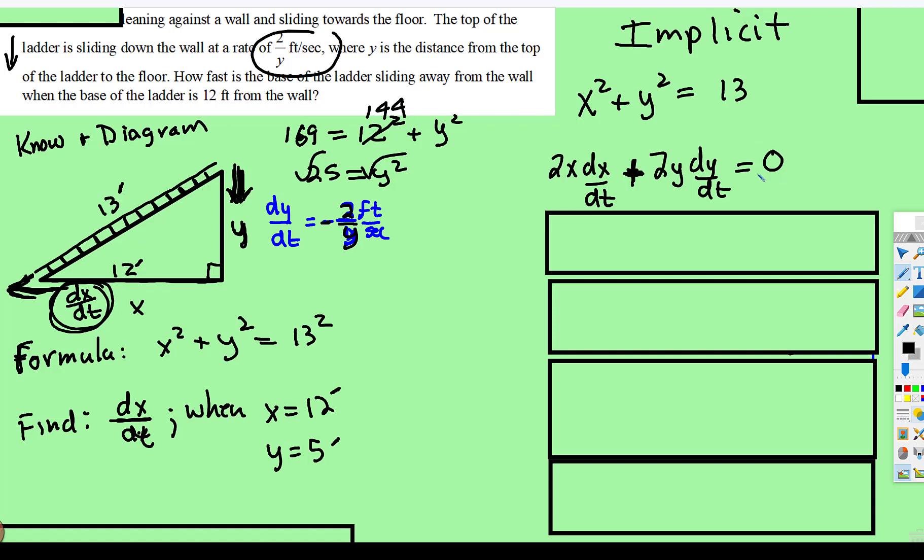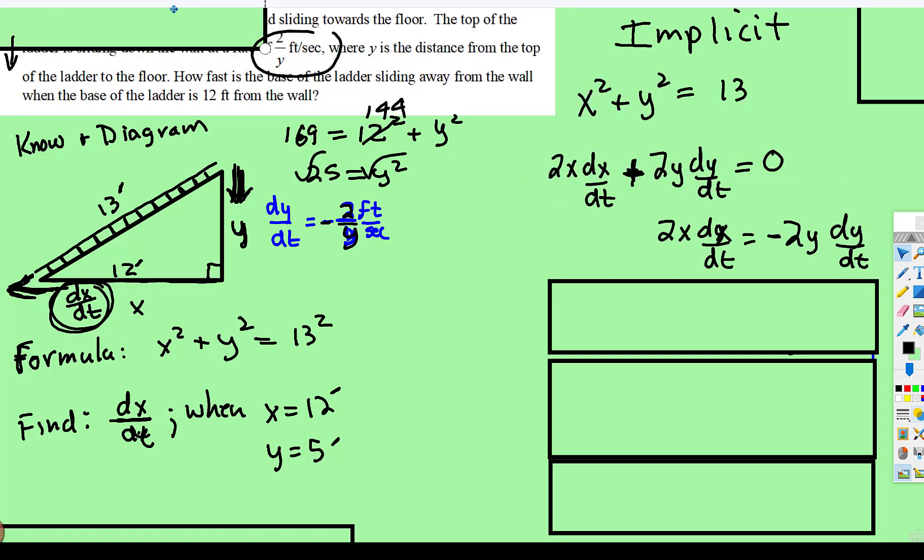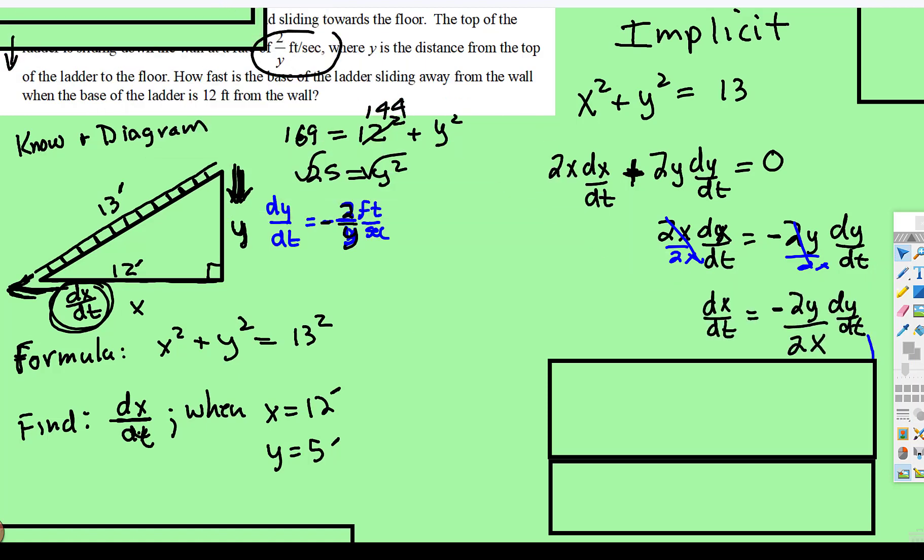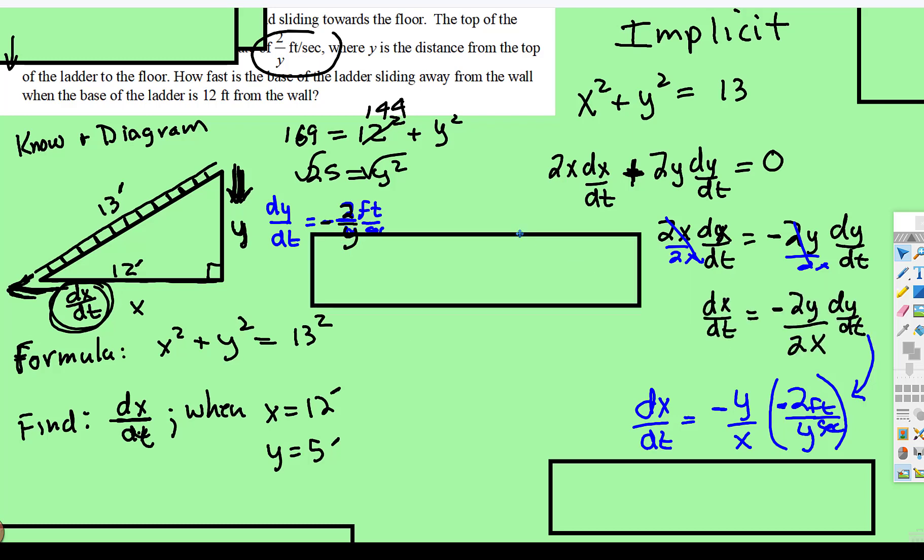We want to get the dx/dt by itself. So we'll subtract the 2y dy/dt and then we'll divide both sides by 2x. So we subtracted the 2y dy/dt. Now we're going to divide both sides by 2x and then the 2s will cancel. And so now we have dx/dt is equal to, when those 2s cancel, negative y over x times dy/dt.